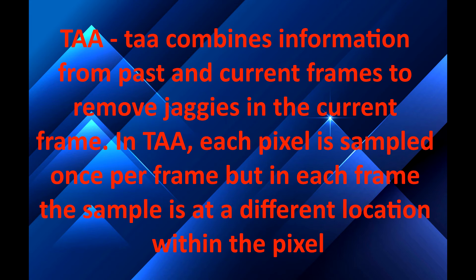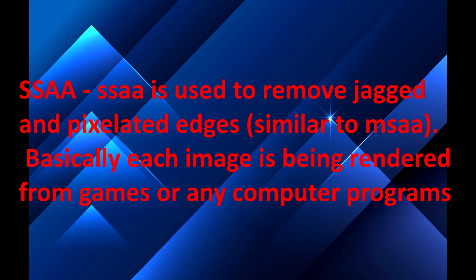TAA combines information from past and current frames to remove jagged edges in the current frame. Each pixel is sampled once per frame, but in each frame the sample is at a different location within the pixel.